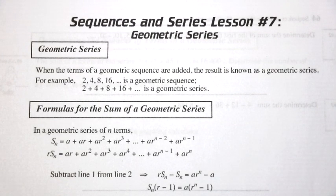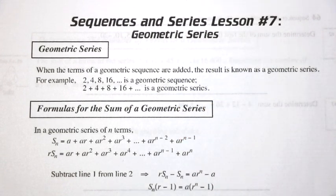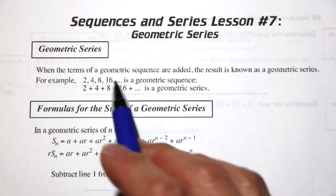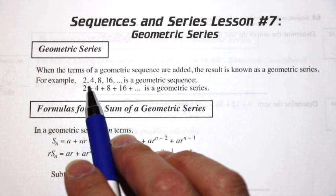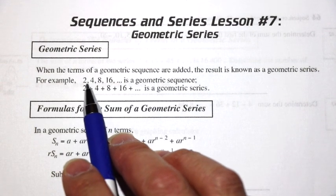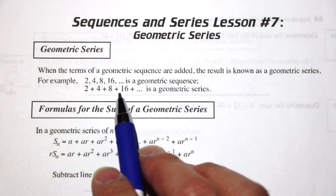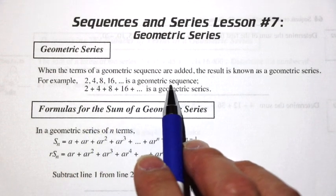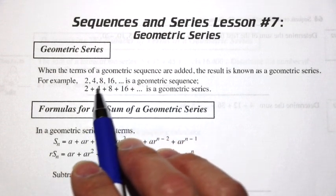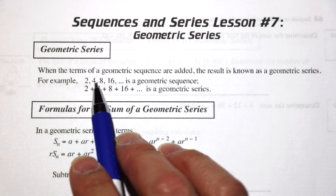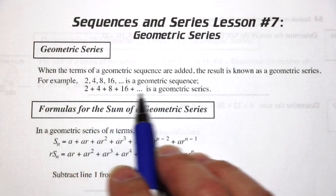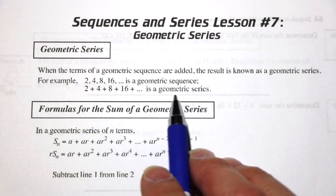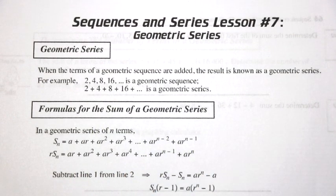Let's talk about sequences and series, lesson number seven: geometric series. What are we talking about when we're talking about a geometric series? A geometric series is really just the sum of the terms of a geometric sequence. So you have 2, 4, 8, 16 as a geometric sequence. If you add those terms together and get the total, that's called the geometric series.